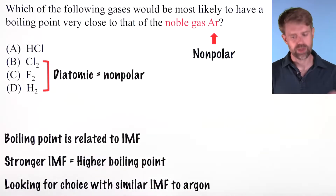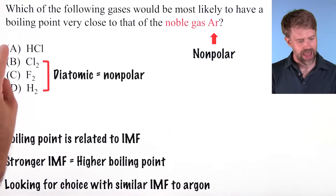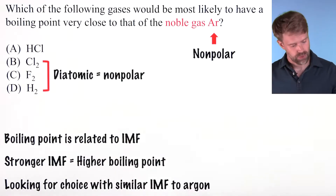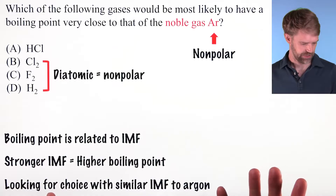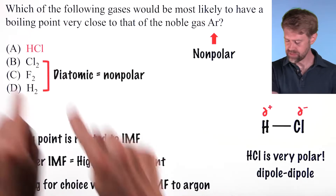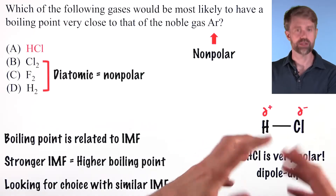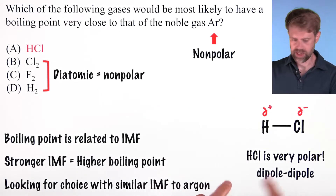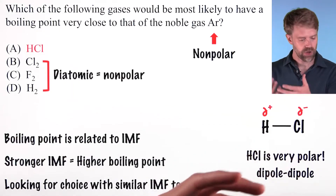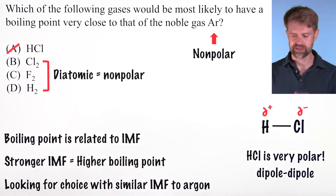When we look at our answer choices, we immediately see that three of them are diatomic elements — Cl2, F2, and H2 — and one is not. All diatomic elements are non-polar, so these three are likely candidates. HCl, on the other hand, is the outlier. Chlorine is pretty electronegative and hydrogen is not, which means HCl is a polar molecule. It experiences dipole-dipole attractions, which are a strong form of IMF. It's going to have a higher boiling point compared to argon, so we can cross it off — it's the clear outlier.